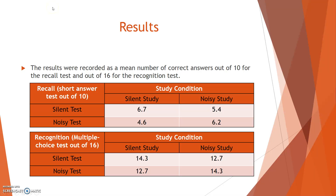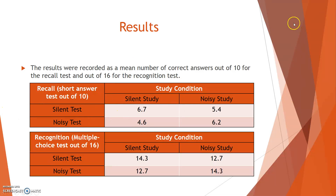Results. The results were recorded as a mean number of correct answers — out of 10 for the recall test and out of 16 for the recognition test. For the recall test: silent study/silent test scored 6.7, and noisy study/noisy test scored 6.2. These matching conditions were significantly higher than the mismatching conditions: noisy study/silent test scored 4.6, and silent study/noisy test scored 5.4.